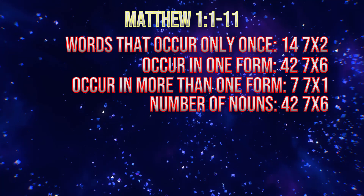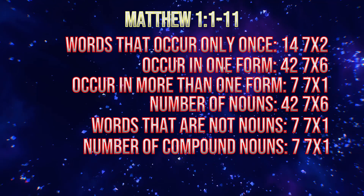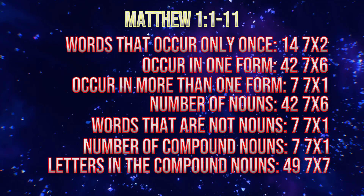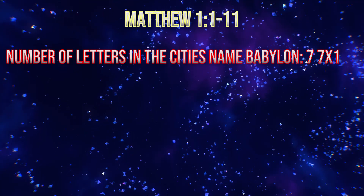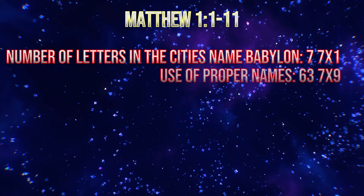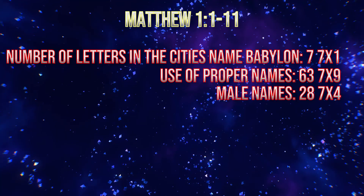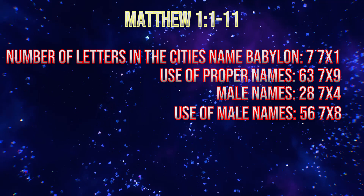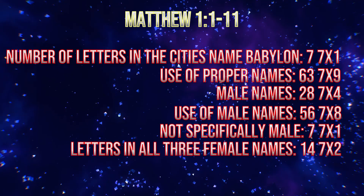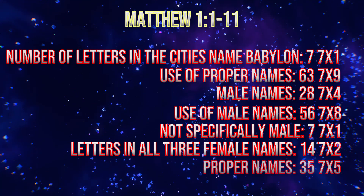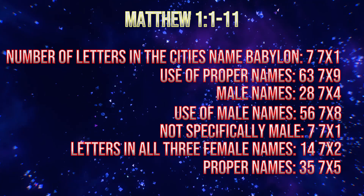The number of nouns is 42. Words that are not nouns: 7. The number of compound nouns is 7. Letters in the compound nouns: 49. The number of letters in the city's name Babylon is 7. The use of proper names is 63. The number of male names is 28. The use of male names is 56. The names not specifically male are 7. The letters in all three female names are 14. The number of proper names is 35. All of these are multiples of 7.